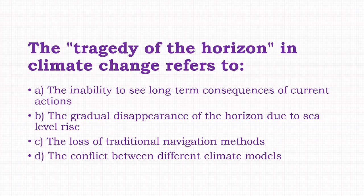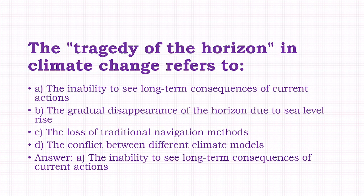The tragedy of the horizon in climate change refers to: the inability to see long-term consequences of current actions, the gradual disappearance of the horizon due to sea level rise, the loss of traditional navigation methods, the conflict between different climate models. The answer is option A, that is the inability to see long-term consequences of current actions.